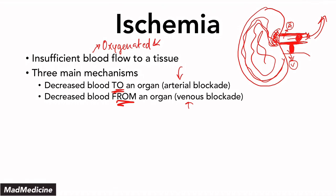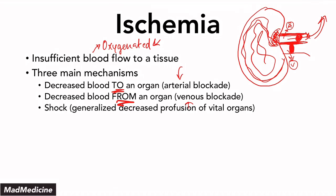The third mechanism is generalized shock. If you have shock, you're going to have a generalized decrease in perfusing your organs overall. Because you have a decrease in perfusion, it's not going to let enough blood get to the organs — it's not something blocking it, it's just that there's not enough pressure pushing the blood to the organ. These are the three main mechanisms of ischemia.